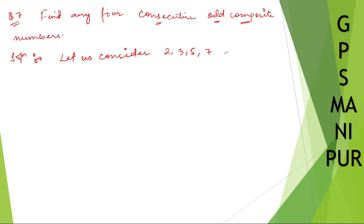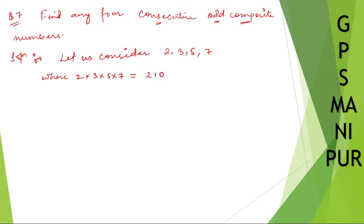Okay, so the product: two into three into five into seven is equal to two hundred ten. Now for four consecutive odd composite numbers, the first number we consider starts around two hundred ten.